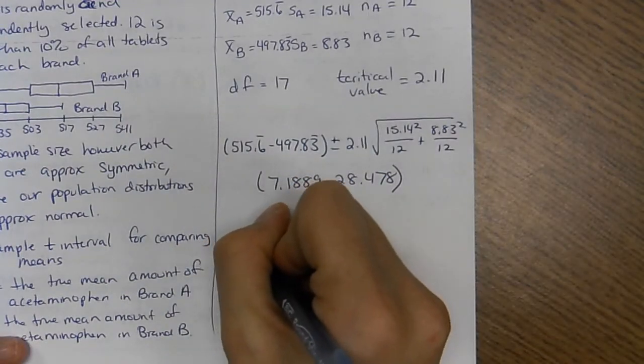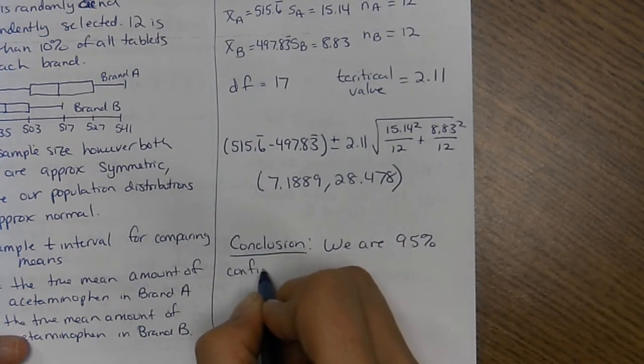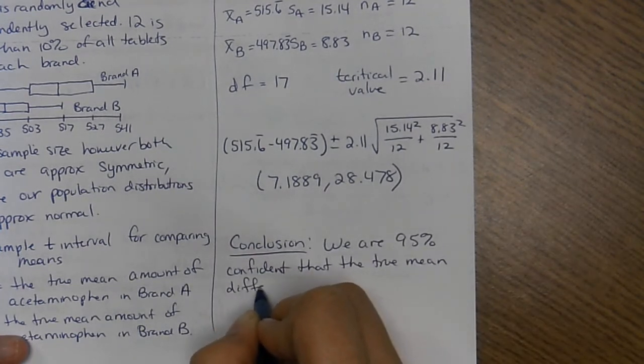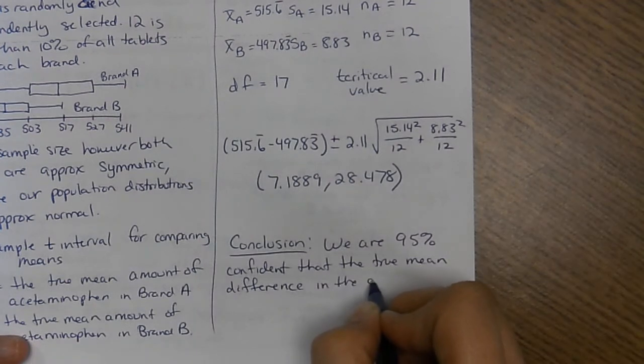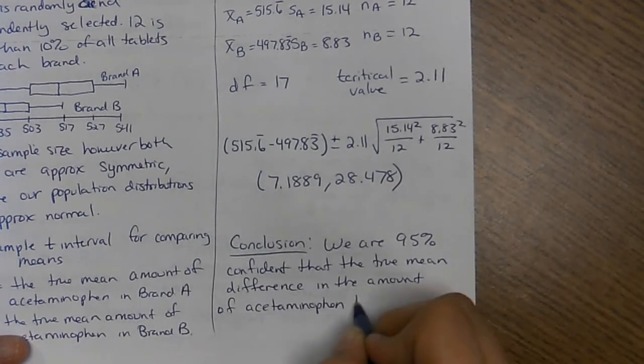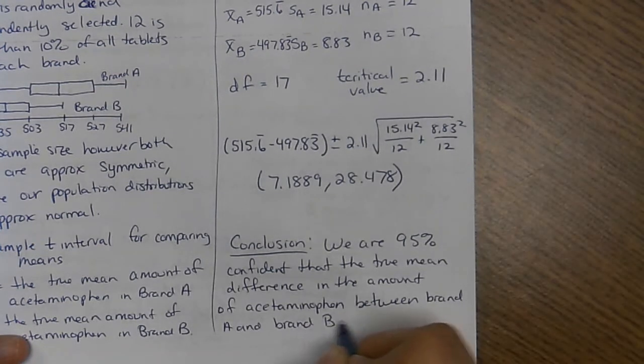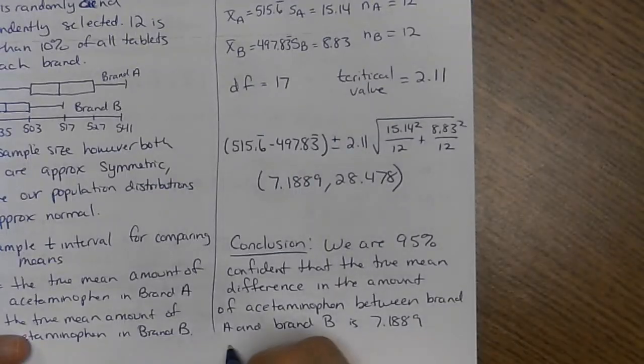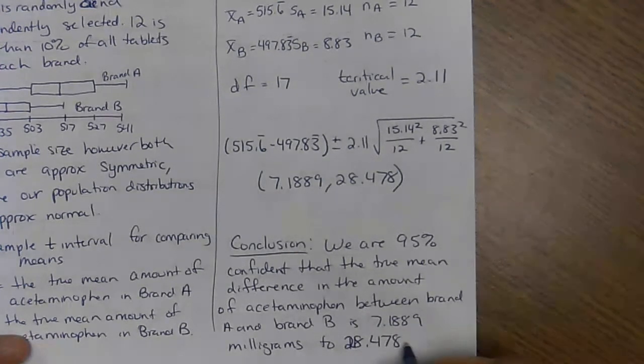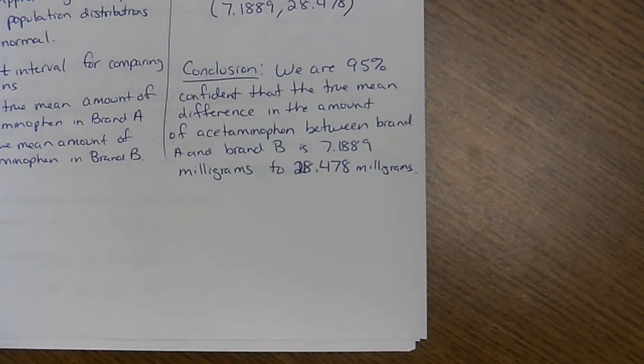So our conclusion. We are 95 percent confident that the true mean difference in the amount of acetaminophen between brand A and brand B is 7.1889 milligrams to 28.478 milligrams.